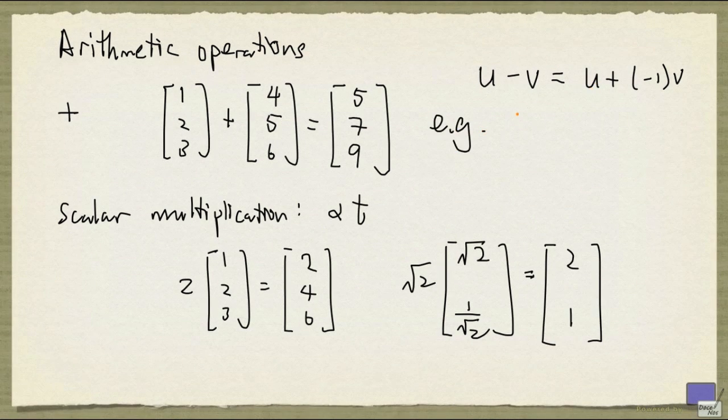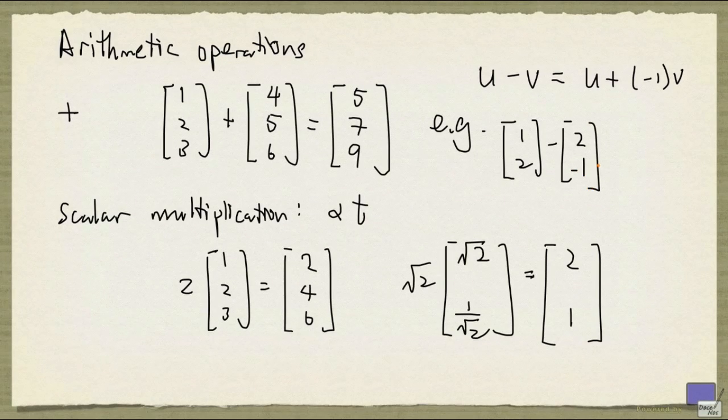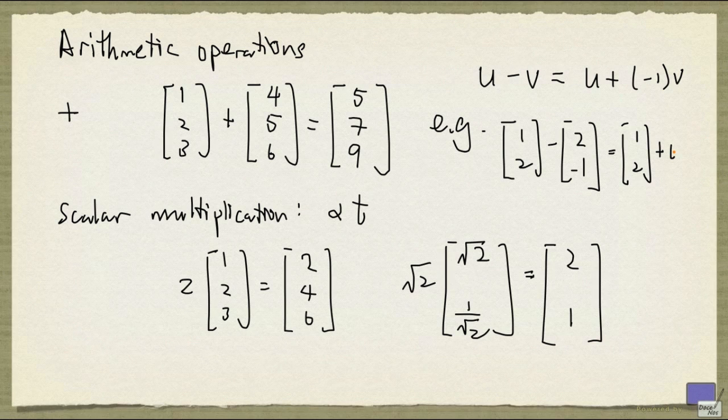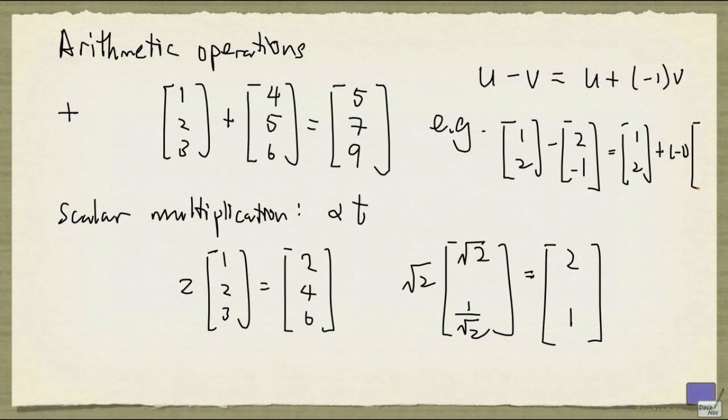Let's end with an example. So if you are taking the difference between these 2 tuples, what in fact you're doing is you multiply the second one by minus 1 and add them.